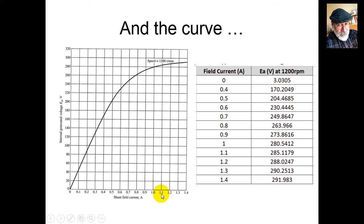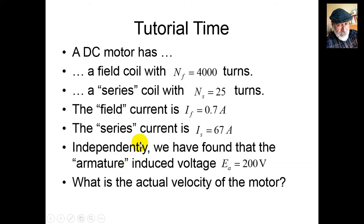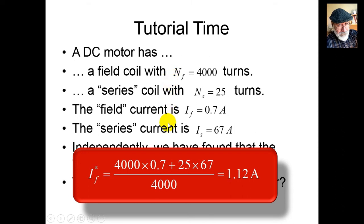We're given the magnetization characteristic: Ea at test velocity 1200 RPM for values of IF*. First, we compute IF*. IF* equals (NF·IF + NS·IS) / NF, which is (4000 × 0.7 + 25 × 67) / 4000 = 1.12 amps.